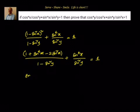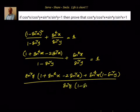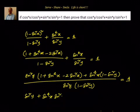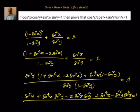Taking LCM, we will have sin²y · (1 + sin⁴x − 2sin²x) + sin⁴x · (1 − sin²y), all divided by sin²y · (1 − sin²y), equals 1. Let us open the brackets: sin²y + sin⁴x·sin²y − 2sin²x·sin²y + sin⁴x − sin⁴x·sin²y, divided by sin²y·(1 − sin²y), equals 1.